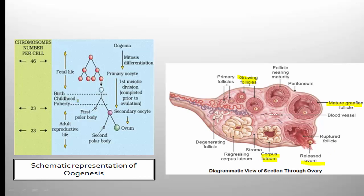This is the schematic representation of oogenesis — a 3-mark question. It begins with oogonium, which increases in number by mitosis. The chromosome number in oogonium as well as the primary oocyte is 46. The primary oocyte completes the first meiosis and gives rise to two structures: a larger secondary oocyte and a smaller first polar body, both haploid with 23 chromosomes.